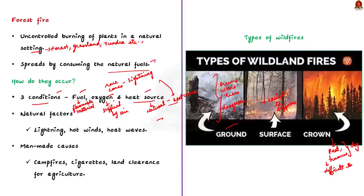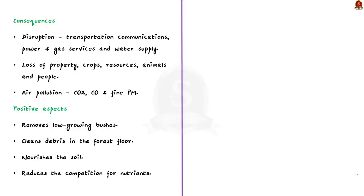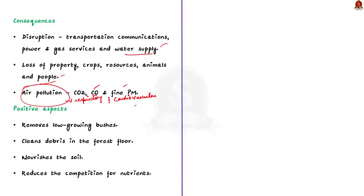Forest fires can disrupt transportation, communications, power, gas services, and water supply, and lead to loss of property, crops, resources, animals, and people. They release large quantities of carbon monoxide and fine particulate matter, causing air pollution and health issues like respiratory and cardiovascular problems. However, there are also beneficial consequences: forest fires remove low-growing bushes, clean the forest floor of debris, open it to sunlight, nourish the soil, reduce competition for nutrients, and allow established trees to grow stronger and healthier.